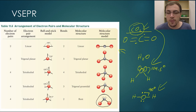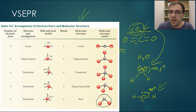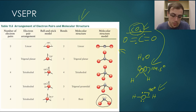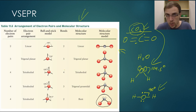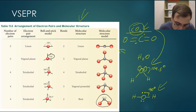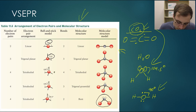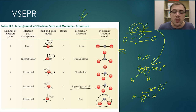Some things you need to take away from VSEPR: you must have all of the molecular structures and their names memorized. You must know bent, linear, trigonal planar, and trigonal pyramidal. You must also know how many bonds or pairs of electrons are needed for each of these molecular structures, and you must know the different bond angles: trigonal planar is 120 degrees, linear is 180 degrees, and tetrahedral and trigonal pyramidal are both 109.5 degrees. You must have that memorized.